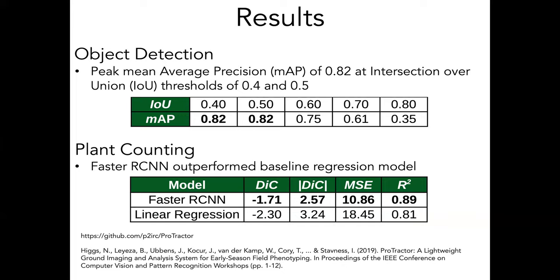Overall, with this object detection approach using a standard Faster R-CNN implementation, we got reasonably good mean average precision and slightly better counting performance than just using linear regression of plant pixels. We're still working on this project and comparing to ground-based counts — people who physically counted plants along canola trial rows — to really prove this counting can be as accurate as the tedious manual process.